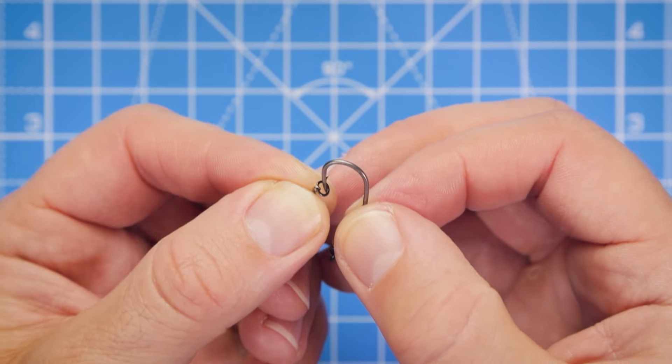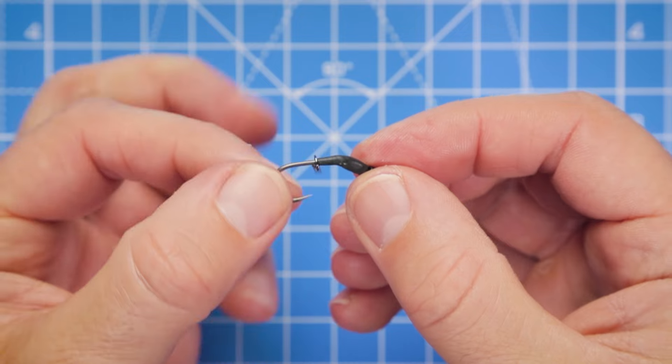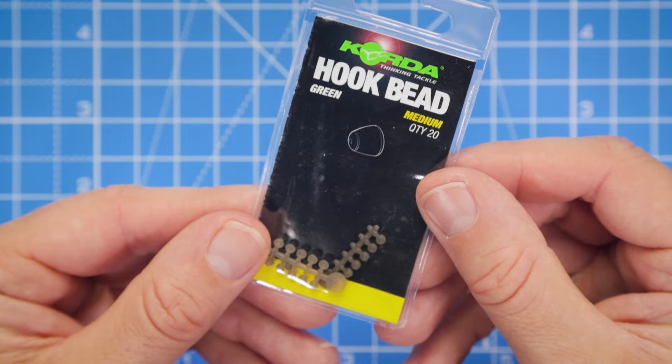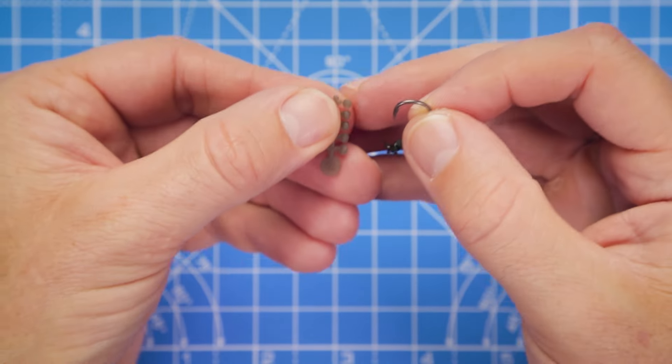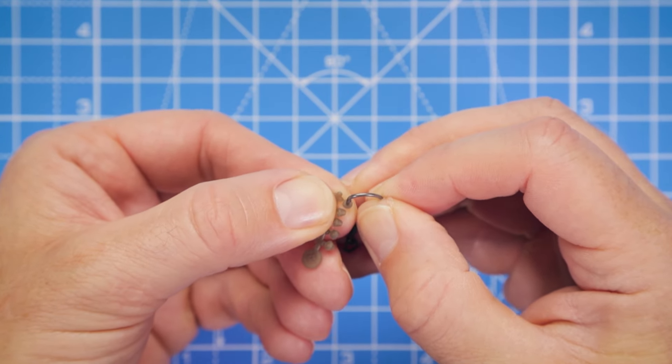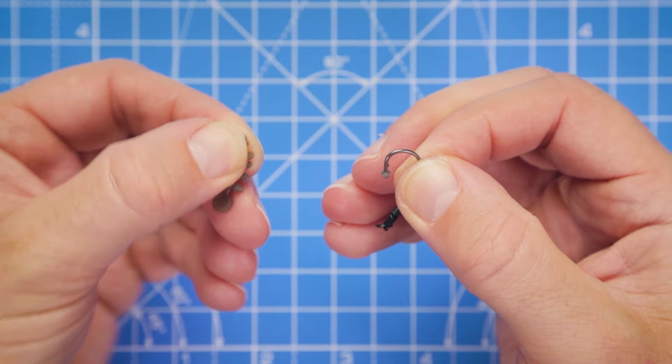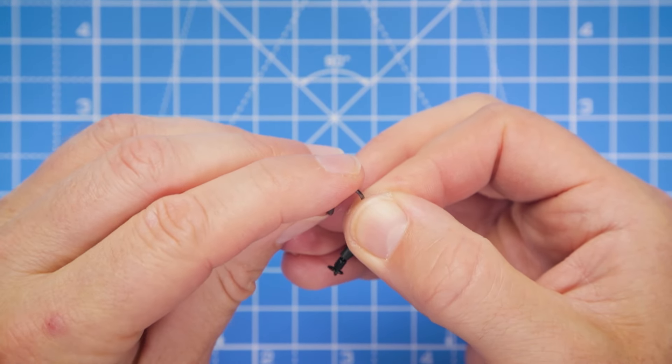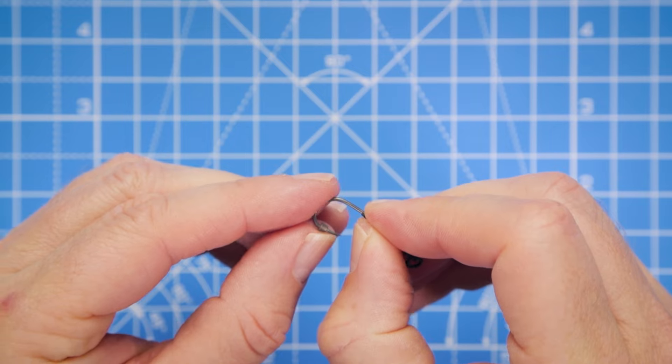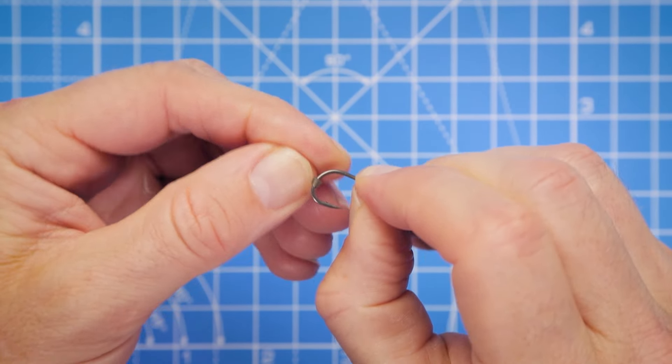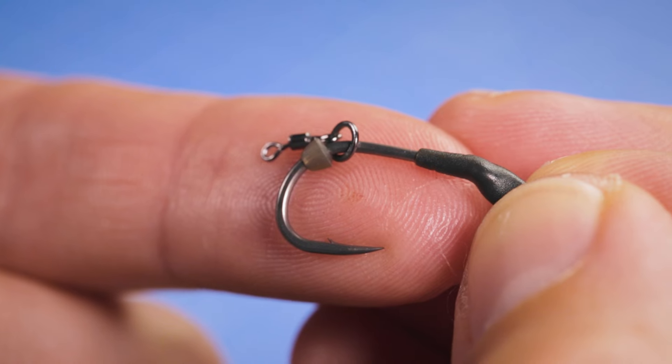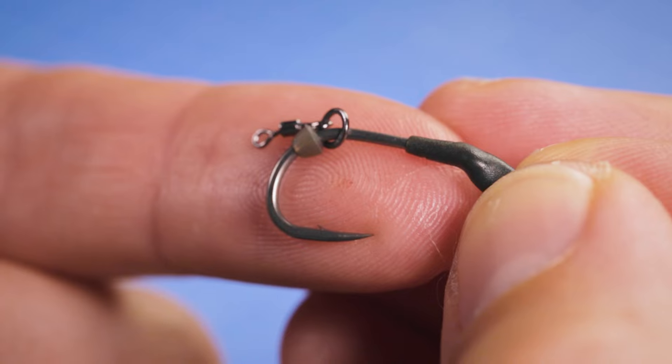We're now going to continue building the rig. Next, we're going to take the micro ring swivel and thread that onto the hook. Now we're going to take one of our hook beads. Simply take your hook point, place it into the center of the hook bead, and pull away. I take my thumbnail and start teasing that hook bead around the bend of the hook. You will find they're quite tight, but that's what we want. We want that bead to hold our hook bait securely in our chosen position. It's just around the bend of the hook, that's where I like to position the pop-up.